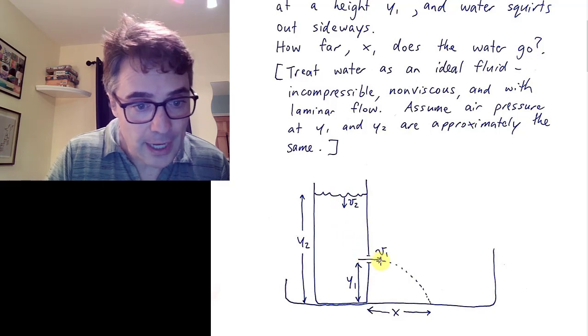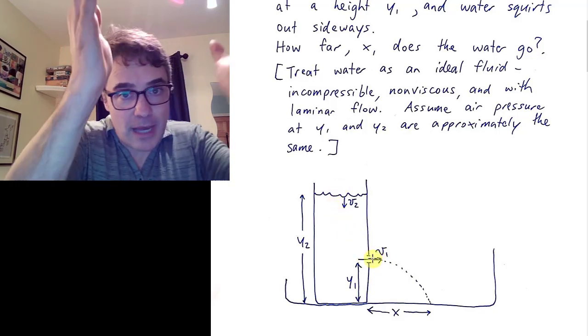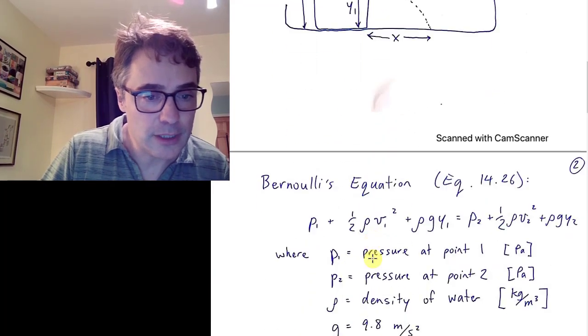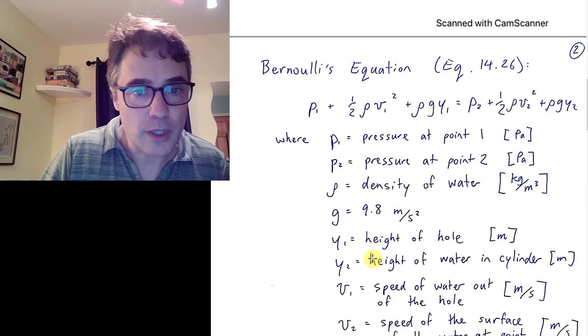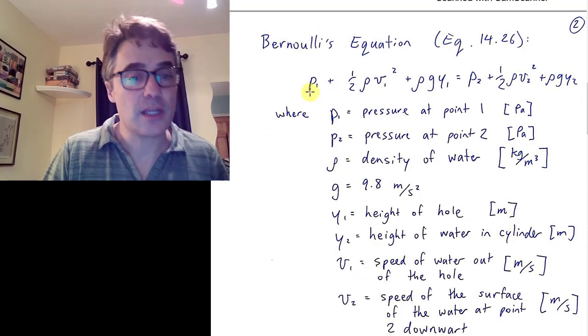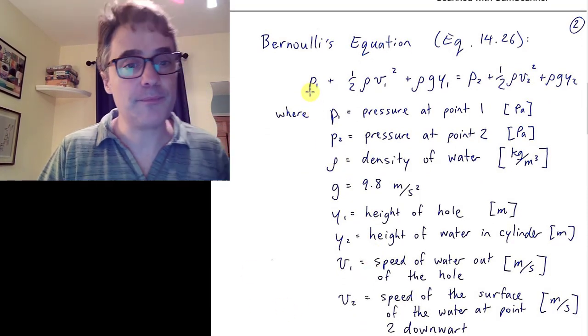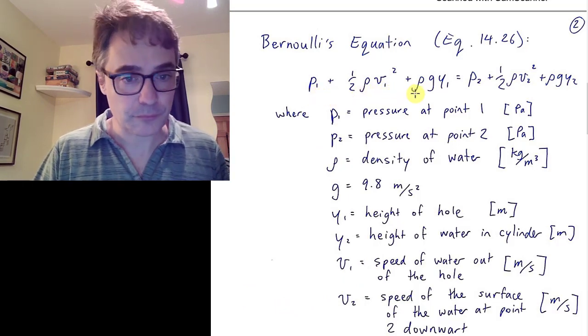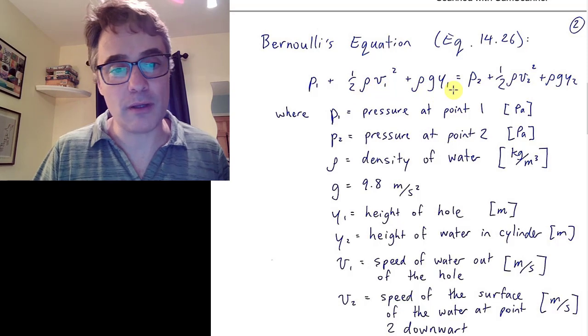If you can imagine laminar flow going, then we have something called Bernoulli's equation, which is equation 14.26 from your book, which relates pressure, P1, to V1, the speed of point 1, and Y1, the height of Y1.